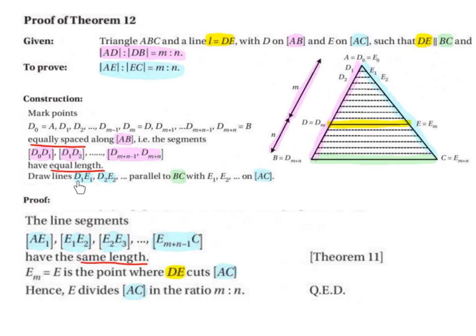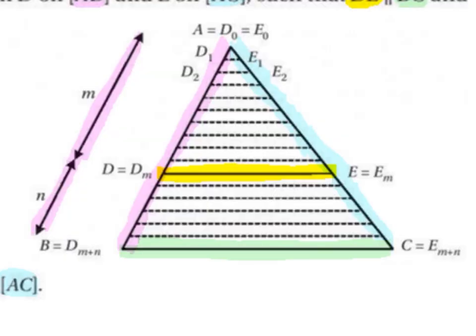Next we're going to draw the lines D1 E1, D2 E2 and so on parallel to BC with E1, E2 etc. on AC. So we're going to draw some parallel lines from D1 across to E1. Remember the lines have to be parallel to this line DE and parallel to this line BC or DM plus N C. So D1 goes to E1, D2 goes to E2, D3 goes to E3, D4 goes to E4 and so on.